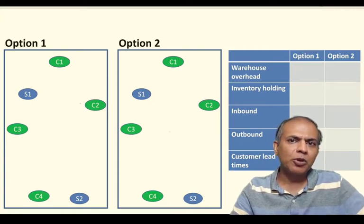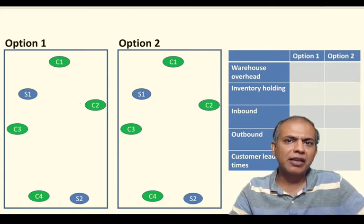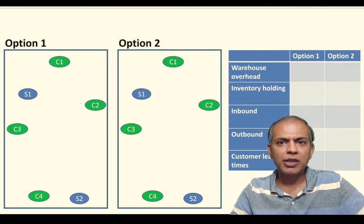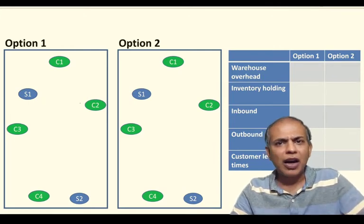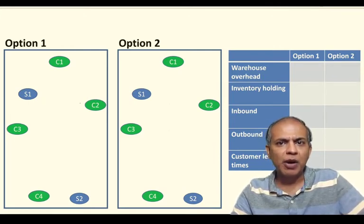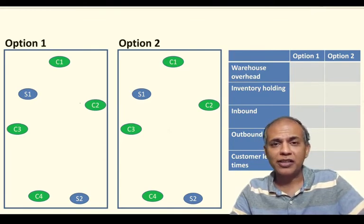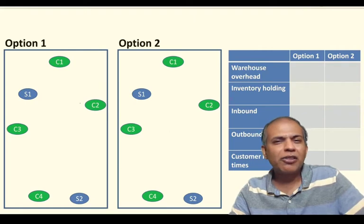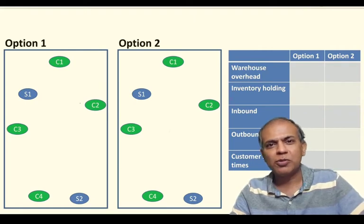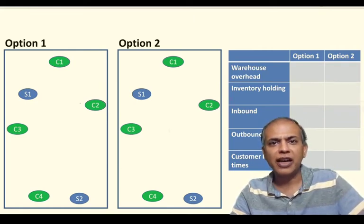Hi, I am going to try and make network modeling of supply chains a little bit easier. Let us assume I have a rectangular shaped market and the market has two suppliers, S1 and S2, and there are only four customers in the market, C1, C2, C3, and C4.